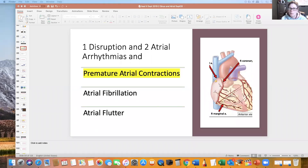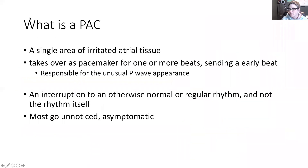In this section we're looking at the premature atrial contraction. Recall that it is not an arrhythmia itself, rather it is an interruption to the underlying rhythm that already exists. A premature atrial contraction is a single site of irritated tissue in the atrium, coming in during that relative refractory period just before the QRS is fully recovered.